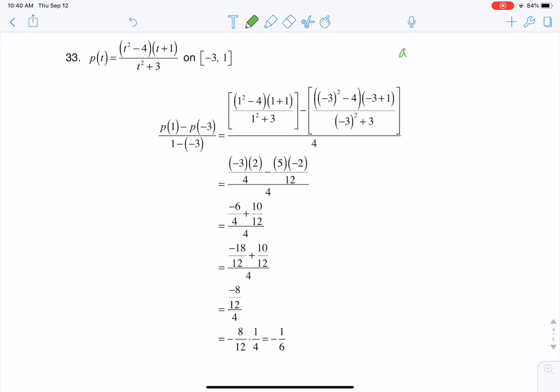Whenever you hear the phrase average rate of change, they're asking you to find a slope. So ultimately we're going to do Y2 minus Y1 over X2 minus X1, but we have different letters in this case.